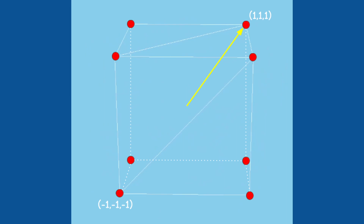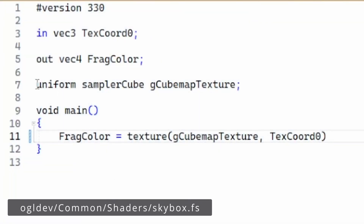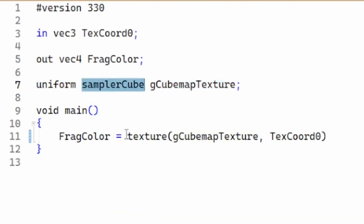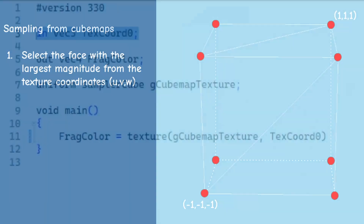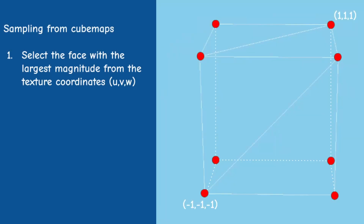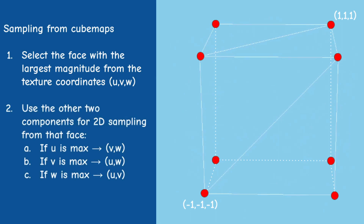The box has 8 vertices and their position vectors go from (-1, -1, -1) up to (1, 1, 1). We can send this vector from the vertex shader to the fragment shader and during rasterization it will be interpolated across the face of each triangle. OpenGL provides a special type of uniform to sample from cube maps called sampler cube. When we sample from the sampler cube we provide a 3D vector instead of 2D. Sampling here is a two-step process: first, OpenGL selects the face that corresponds to the component of the 3D vector with the largest magnitude, and then the other two components are used as standard UV coordinates for 2D sampling from that face.